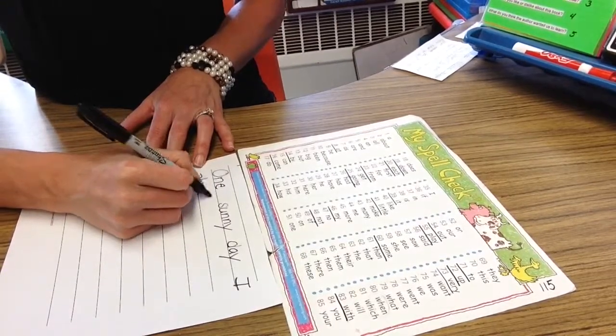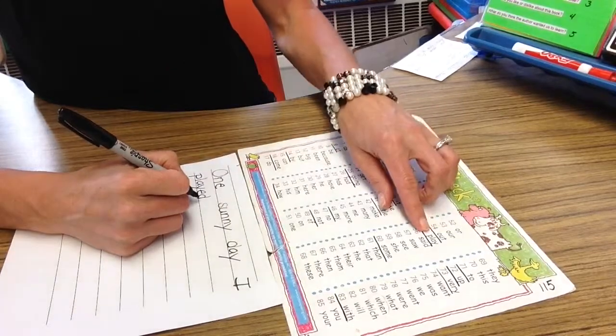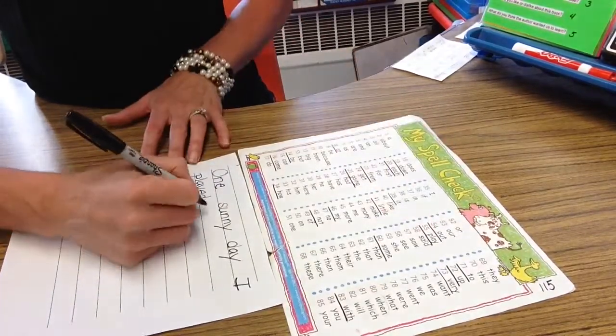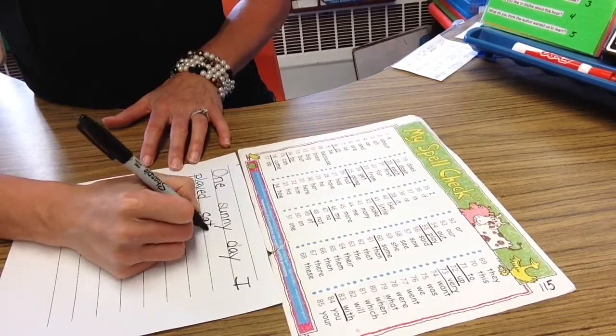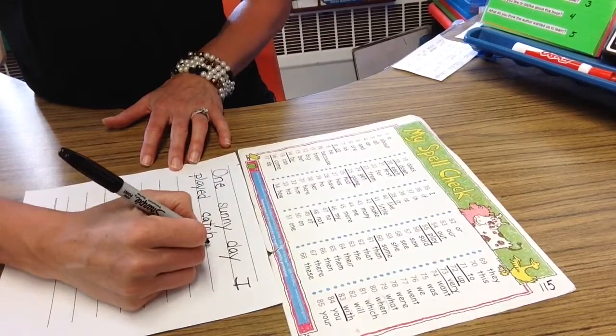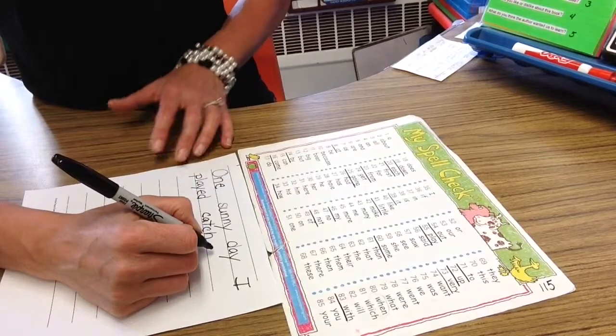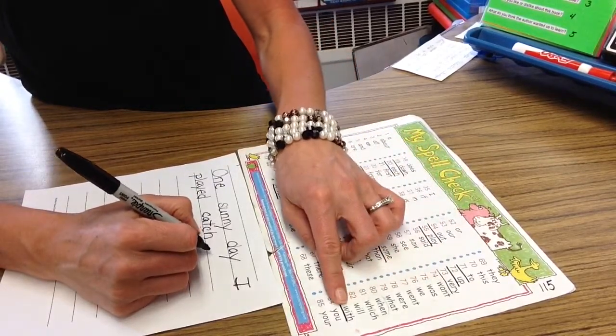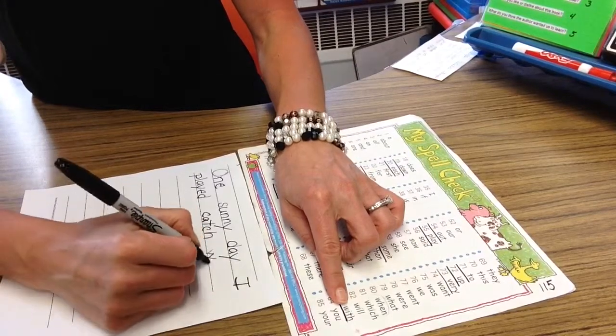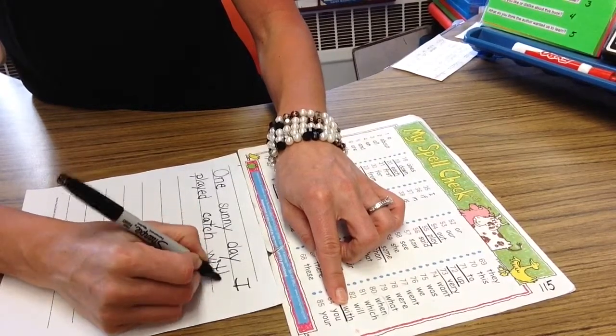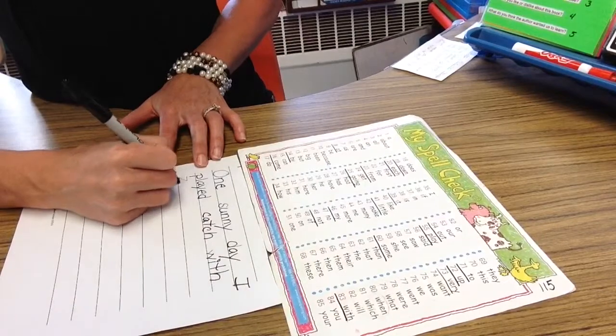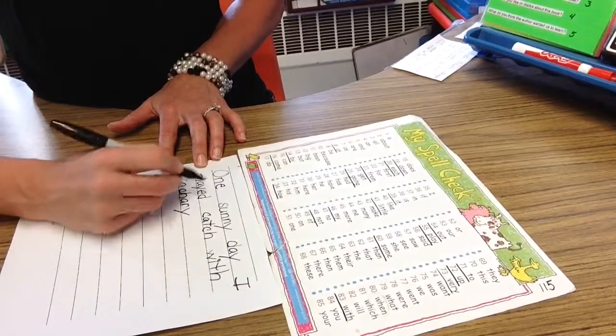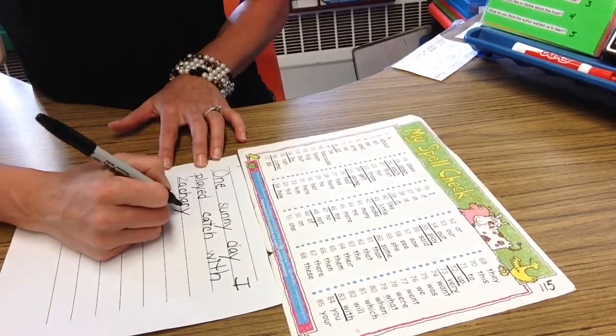Played, I think to myself, is that a word wall word? Oh it is too. So I need to use my word wall to spell the word correctly. Catch, that's not a word that a lot of writers would use so that's not on the word wall. With, that's a word we use a lot. I look in the W's, I know it starts with a W so I'm going to go over here and find with. Zachary, that's a name so I know that's not on the word wall. I'm going to spell that the way I know. One sunny day, I played catch with Zachary.